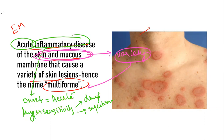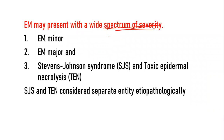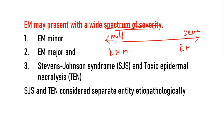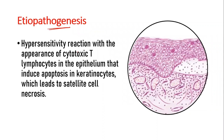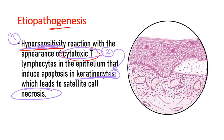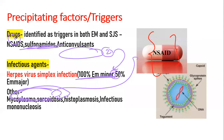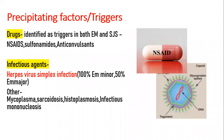Erythema Multiforme presents with a wide spectrum of severity ranging from mild to severe — from Erythema Multiforme minor to major. Apart from that, Steven Johnson Syndrome and Toxic Epidermal Necrolysis were also considered part of the spectrum, but now they are considered a separate entity. In the etiopathology, it occurs because of a hypersensitivity reaction where your T cells attack keratinocytes, causing apoptosis and necrosis. The reason T lymphocytes attack keratinocytes is believed to be because of precipitating factors or triggers.